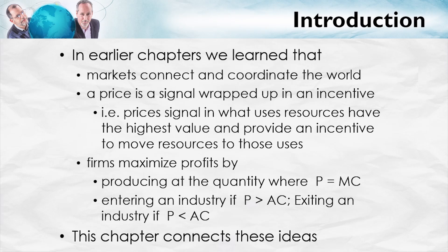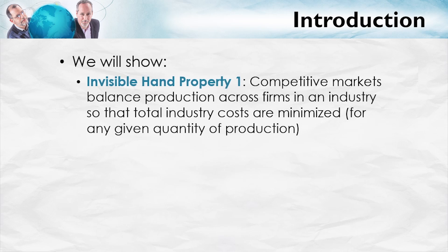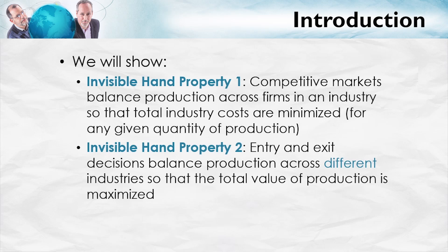What this chapter is all about is connecting these ideas. We're going to show that competitive markets have two remarkable invisible hand properties. First, competitive markets balance production across firms in an industry so that total industry costs are minimized for any given quantity of production. Second, entry and exit decisions balance production across different industries so that the total value of production is maximized. We'll explain each of these in turn.